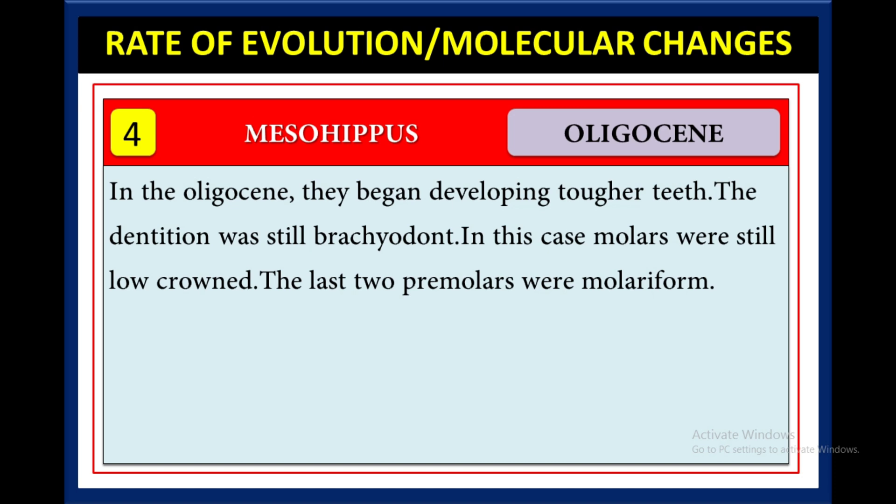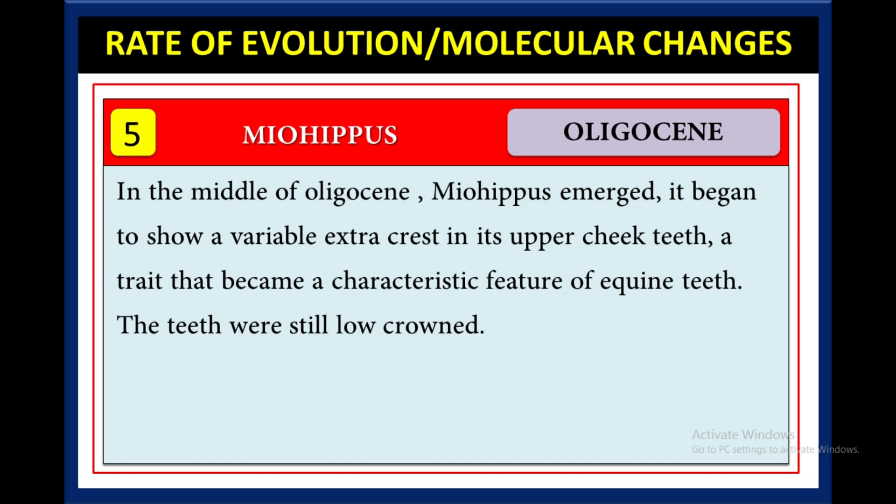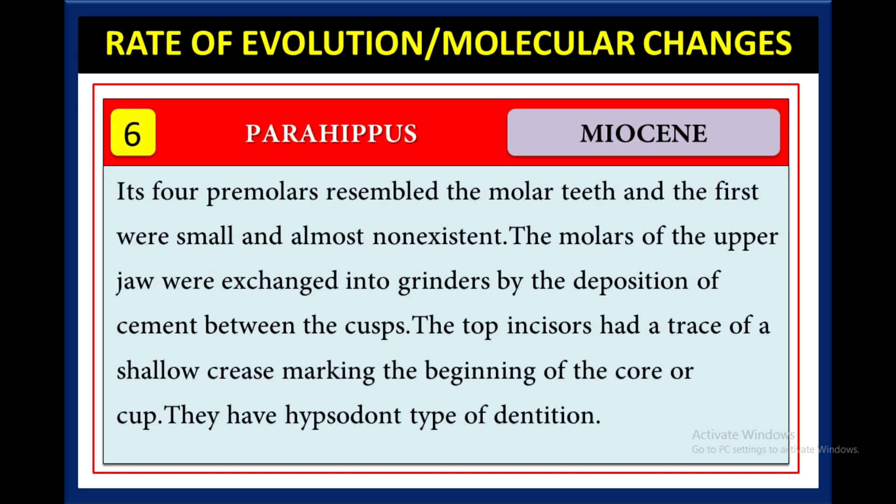Then in the middle of Oligocene, Miohippus emerged. It began to show a variable extra crest in its upper cheek teeth, a trait that became a characteristic feature of equine teeth. The teeth were still low-crowned.